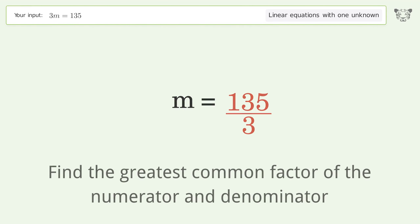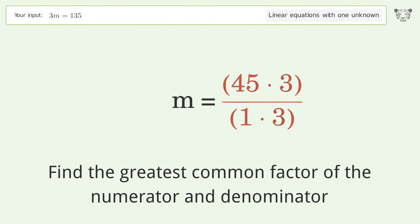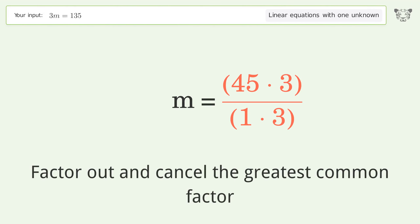Find the greatest common factor of the numerator and denominator. Factor out and cancel the greatest common factor.